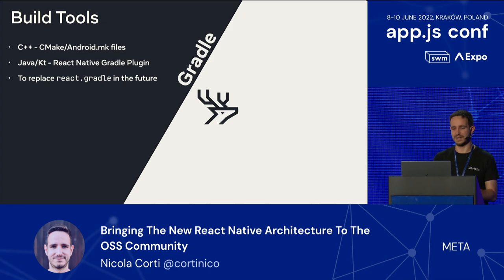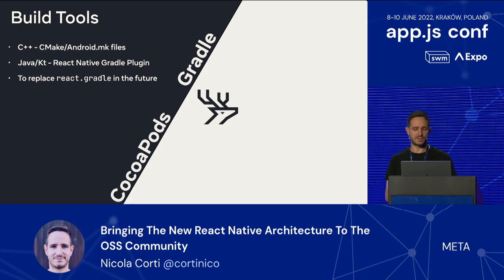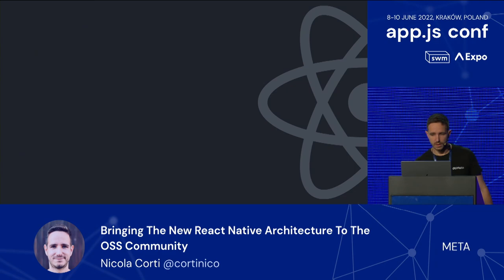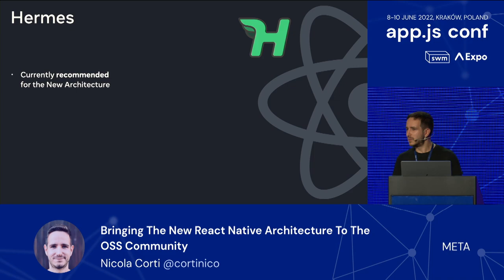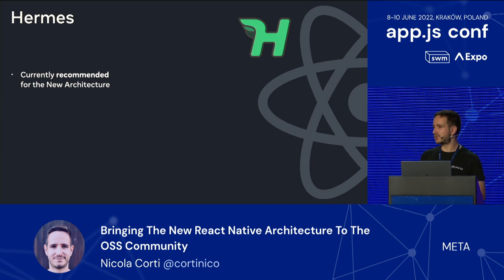Whatever now lives inside React.gradle has already been imported inside the React Native Gradle plugin and we're going to slowly deprecate React.gradle in the future. Similarly for iOS, we have CocoaPods code and logic that has to be adapted, so you will find Ruby files containing the logic to enable the code gen. Talking about changes shipped alongside the new architecture, a couple of words on our JavaScript engine, Hermes: it is the recommended engine. When I say recommended, I want to stress that we will keep supporting pluggability with other engines, but a lot of our focus will be around optimizations for Hermes.